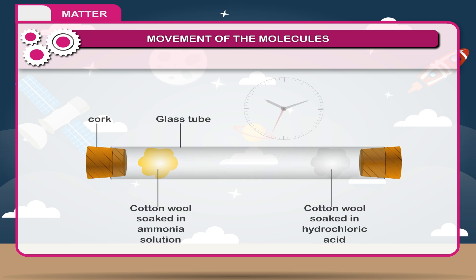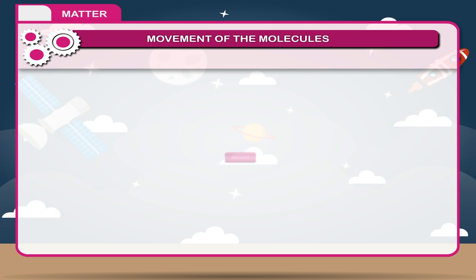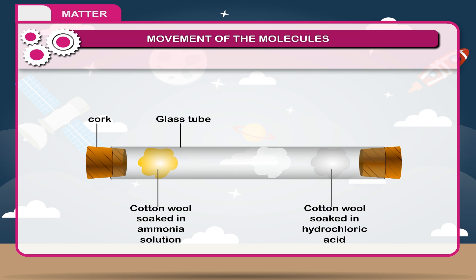Observation: After 2-3 minutes, a white cloud of ammonium chloride is observed near hydrochloric acid end which indicates that molecules of ammonia move faster than the molecules of hydrochloric acid. Result: This activity gives an idea about movement of particles in air or water.